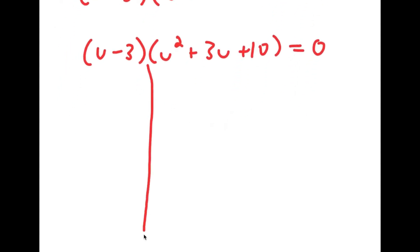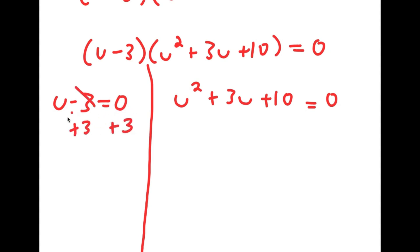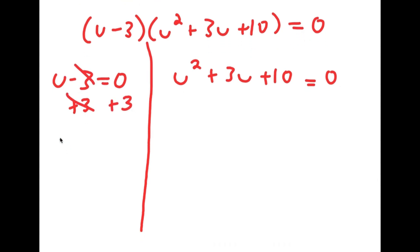This gives me two equations: u minus 3 equals 0, and u squared plus 3u plus 10 equals 0. Solving u minus 3 equals 0 is easy — I add 3 on both sides and get u is equal to 3.